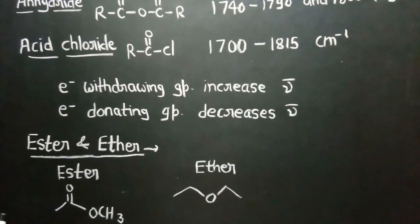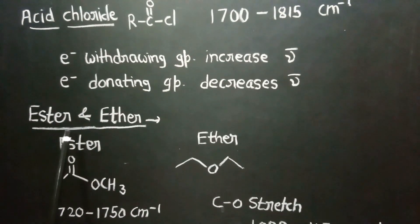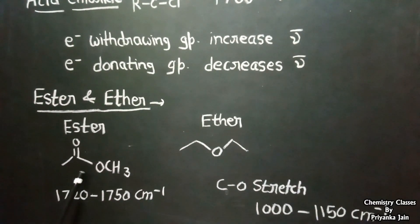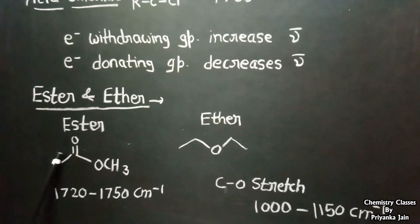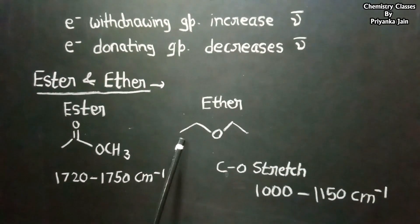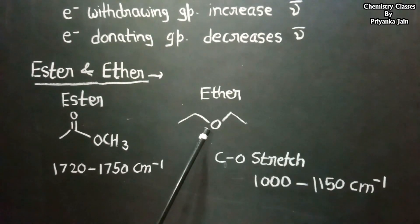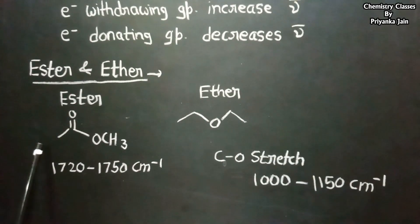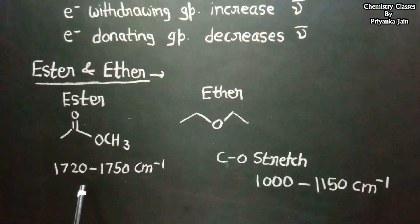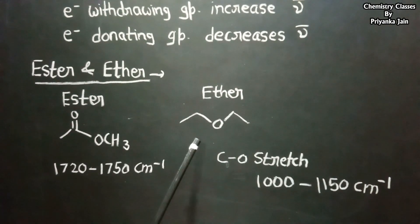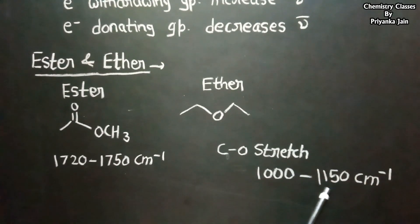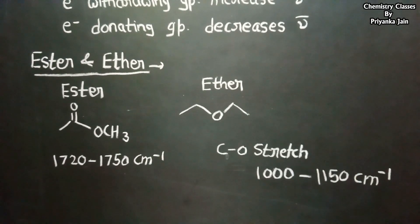How do we differentiate between an ester and an ether? In an ester, there is a carbonyl group with an OCH₃ attached to it. In an ether, two R groups are attached to an oxygen by single bonds. In the case of an ester, we get a peak at 1,720 to 1,750 cm⁻¹ from the carbonyl group. In the case of an ether, we get a C-O single bond stretching frequency near 1,000 to 1,150 cm⁻¹. So we can easily distinguish between the ester and the ether.